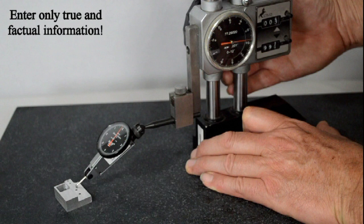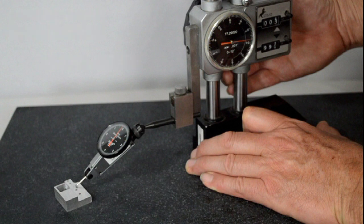Make sure that you only enter factual information. Never lie on the IIR. And that's a brief description of the in-process inspection report. Thanks for watching.